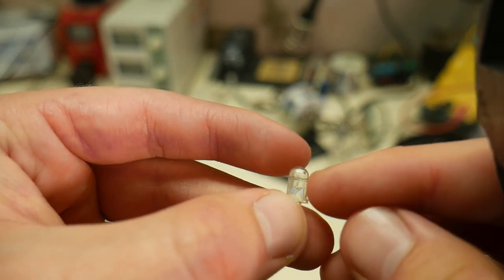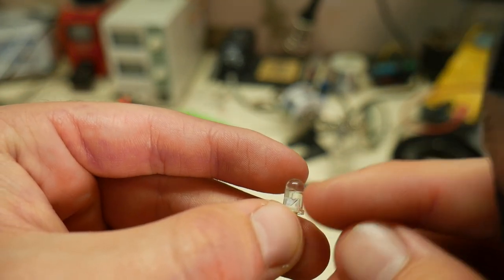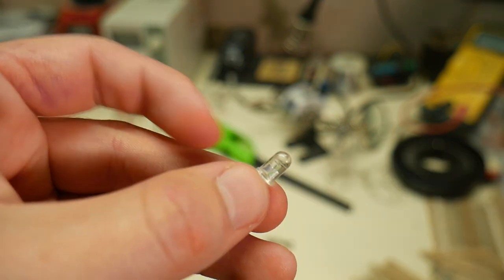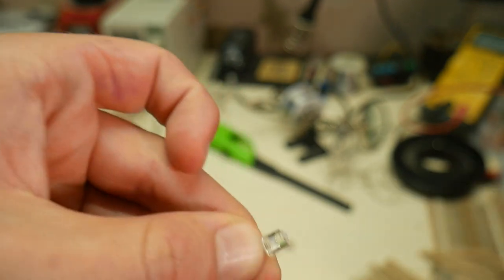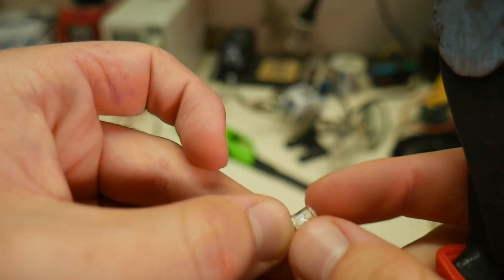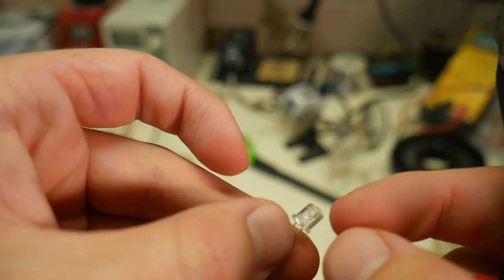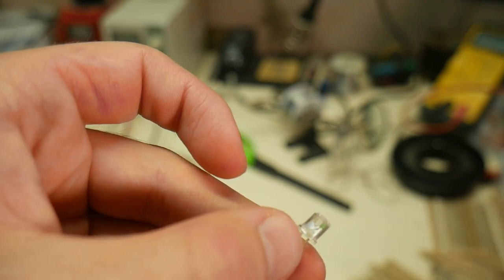So we need to file away this plastic until we're right about at the diode. We can start doing that by cutting off a little bit of the LED and then sanding it down until we get to the diode.